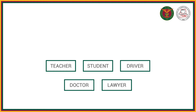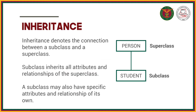For example, a teacher might have an employee number, a student might have a student number, whereas a teacher doesn't have a student number and a driver doesn't have a student number either. So, that's where inheritance comes in.